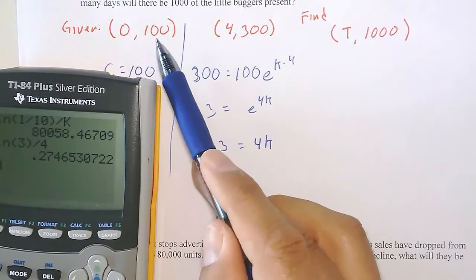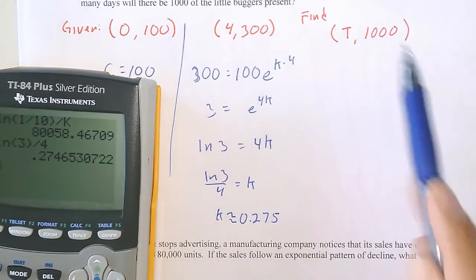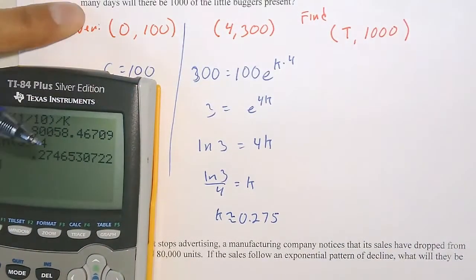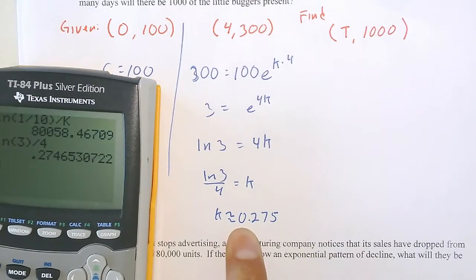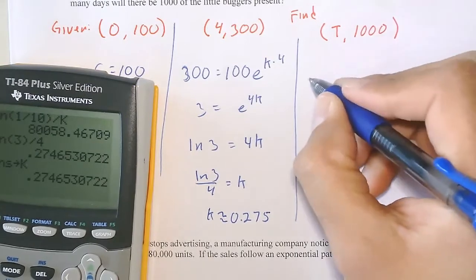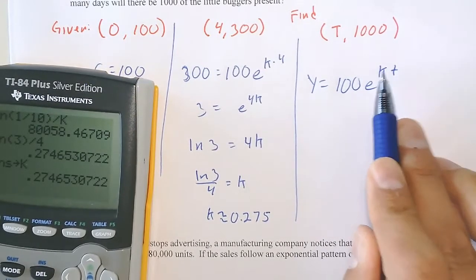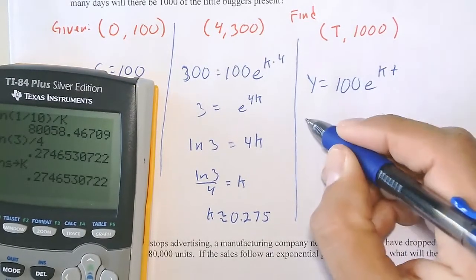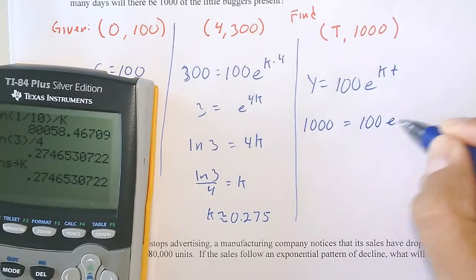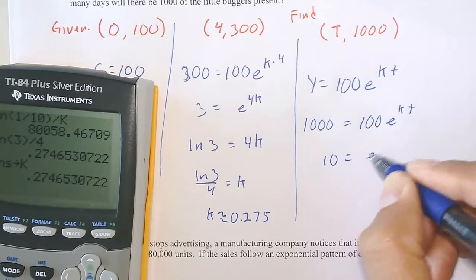Store k in the calculator. Now write the equation: y = 100e^(kt). Plug in y = 1000: 1000 = 100e^(kt). Divide by 100: 10 = e^(kt). Take natural log: ln(10) = kt. Divide by k: t = ln(10)/k. Using the calculator, t ≈ 8.384 days — please verify that yourself.